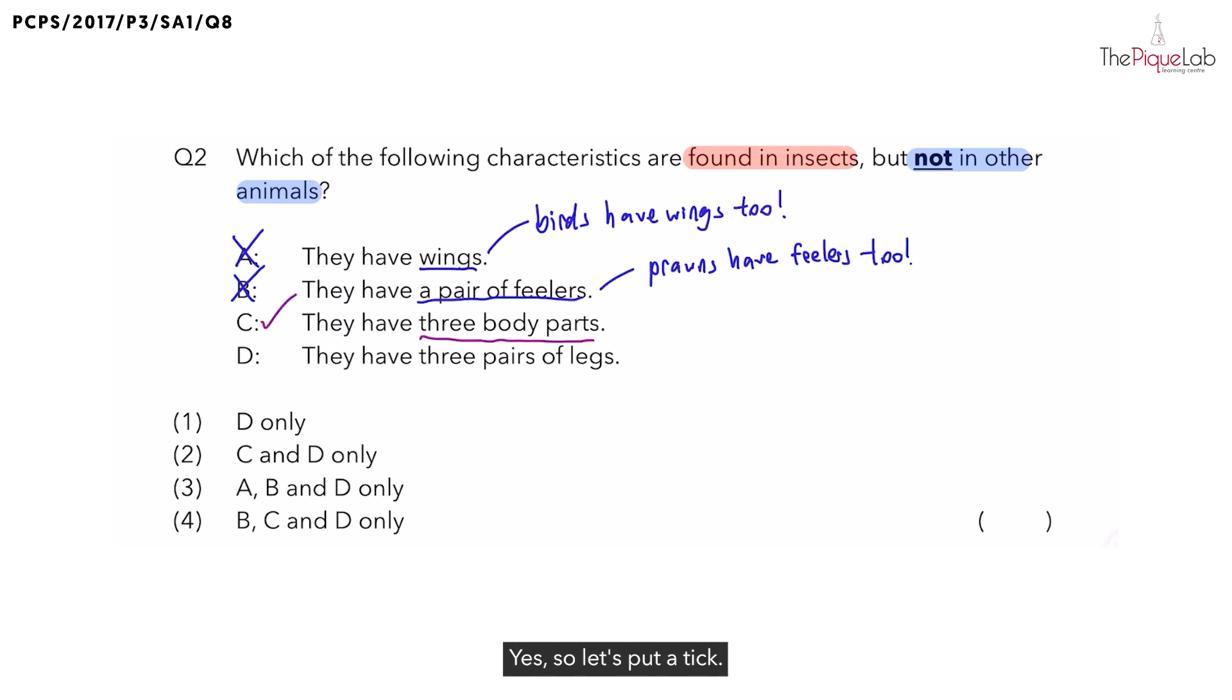And lastly, what about D? They said that insects have three pairs of legs. Now, do any other groups of animals have this? No. Is this found only in insects? Yes, which means can I choose D as my answer? Definitely. So with this, we can get our answer already. What should be the correct answer then? The correct answer should be C and D only, which is option 2.